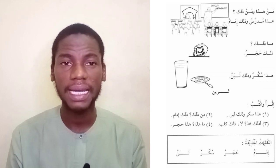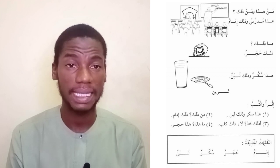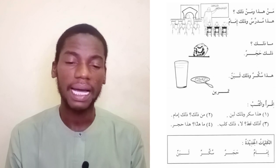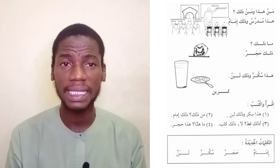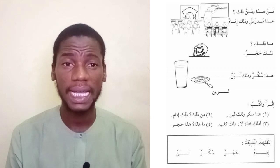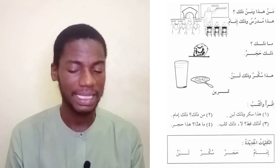'Man hatha wa man thalik?' — who is this and who is that? 'Hatha mudarrisun' — this is a teacher. 'Mudarris' comes from the verb 'darrasa', which means to teach; the one who teaches is called a mudarris. 'Wa thalik rajulun' — and that is a man. 'Thalik imamun' — that is a leader.